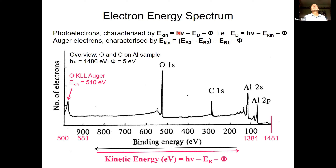Other common X-ray anode materials are magnesium at slightly lower energy, silver at slightly higher, or copper which is already in the hard X-ray regime. Typical photon fluxes for X-ray anodes are of the order of 10⁹ to 10¹¹ photons per second over a relatively wide area. The natural line width limits energy resolution, but it can be reduced by using monochromators in front of the X-ray anode.